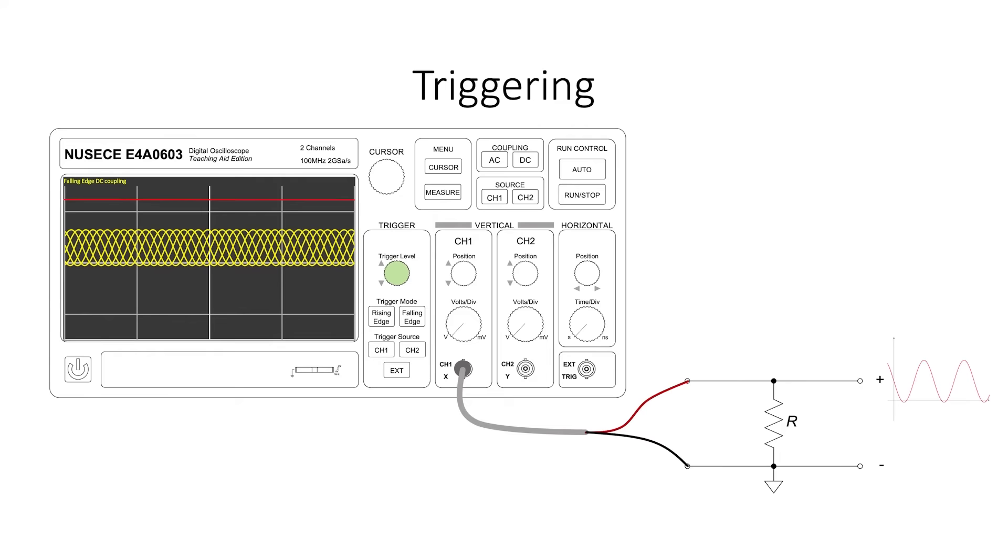If we try to change the trigger level by rotating the knob labeled trigger level to any voltage higher than any part of the signal, then you'll normally wind up with a mess on the screen because it's highly unlikely that the oscilloscope will know where to draw the signal when it refreshes the display. If you see a mess like this on the screen, it's normally an indication that the trigger is not properly set. Many oscilloscopes also allow you to trigger using an externally provided signal.